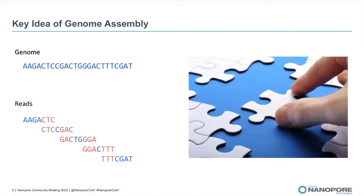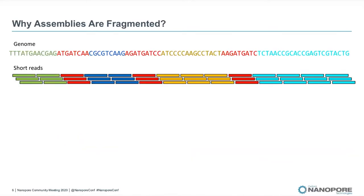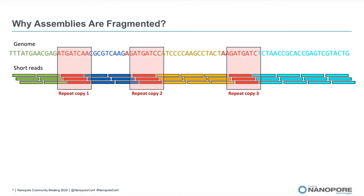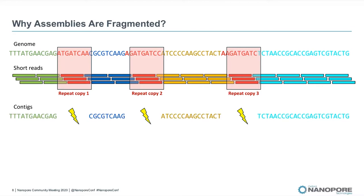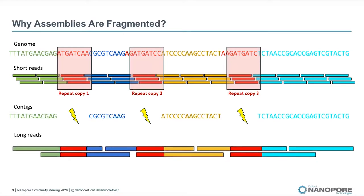As you probably know, assemblies of relatively large and complex genomes are typically not complete — they are fragmented. The reason is repeats in the genome. In this example, we have three repeats shown in red. Reads that are shorter than the repeats are indistinguishable, and that means we cannot assemble through them. We can only assemble the sequence in between repeats, and these sequences are called contigs. But what we really want is long reads that span over the repeat sequences and allow us to generate a complete genome.